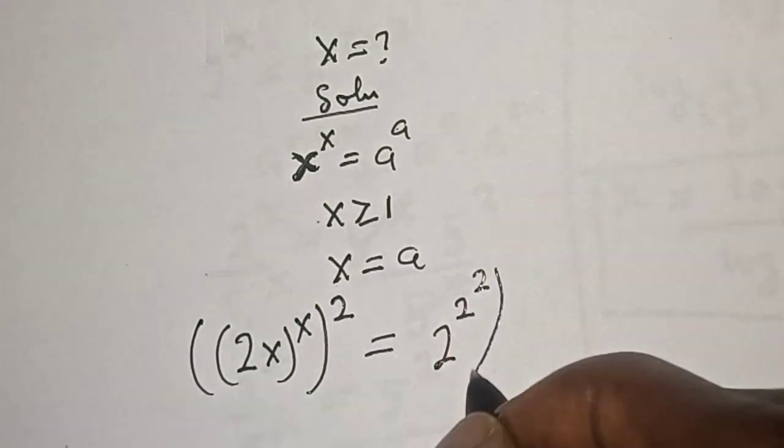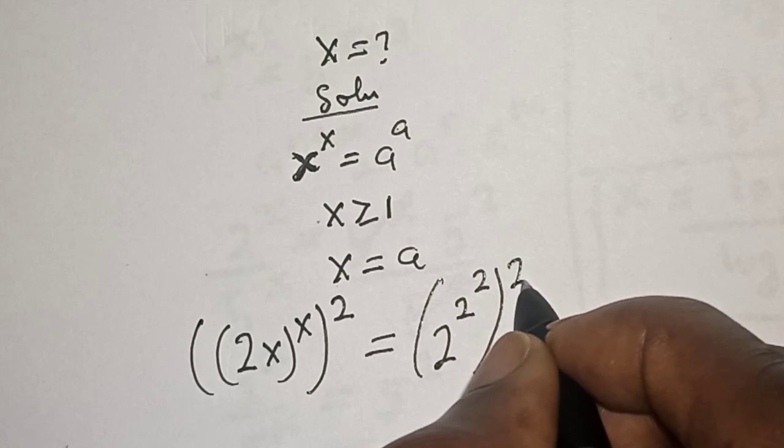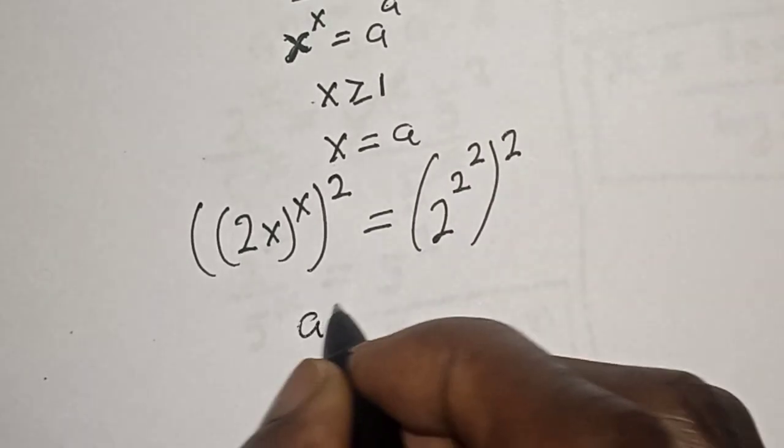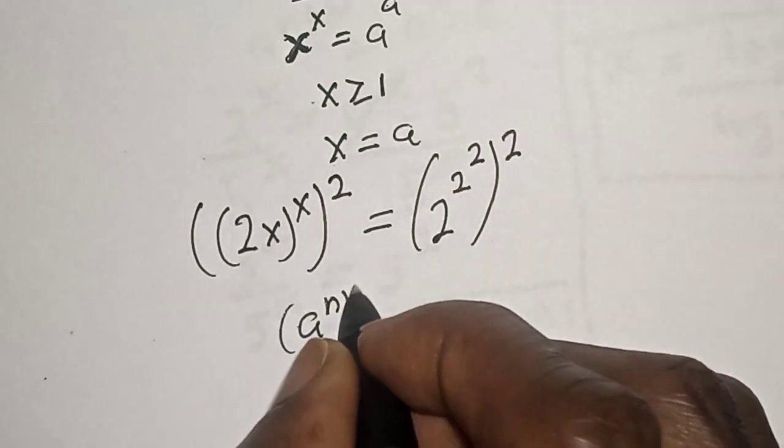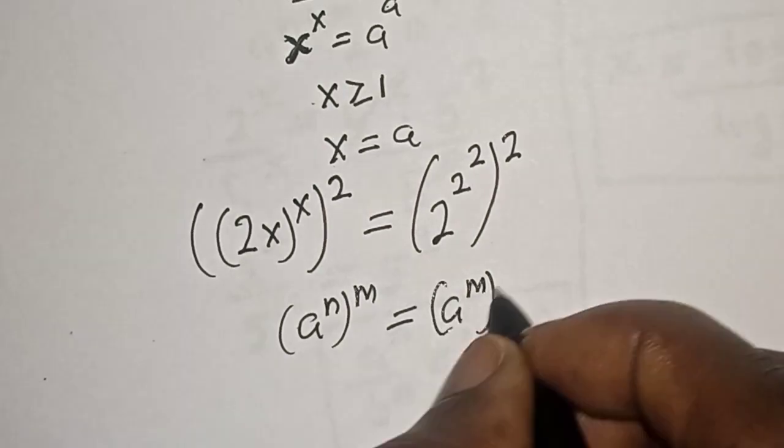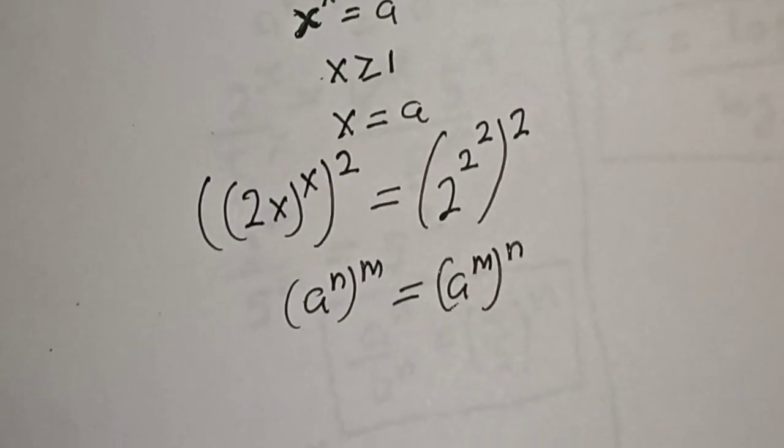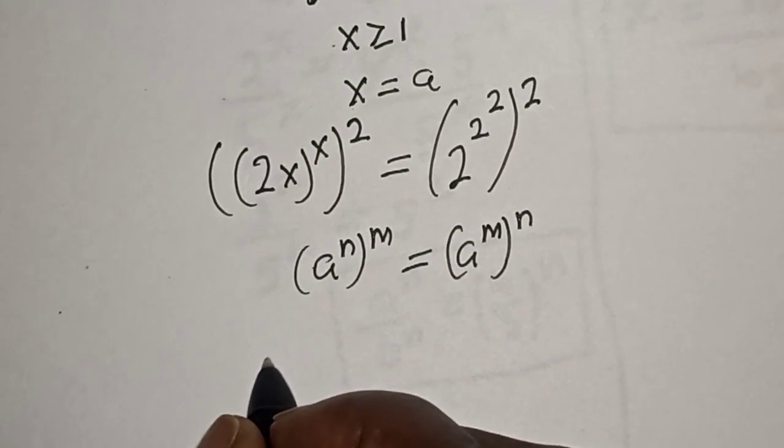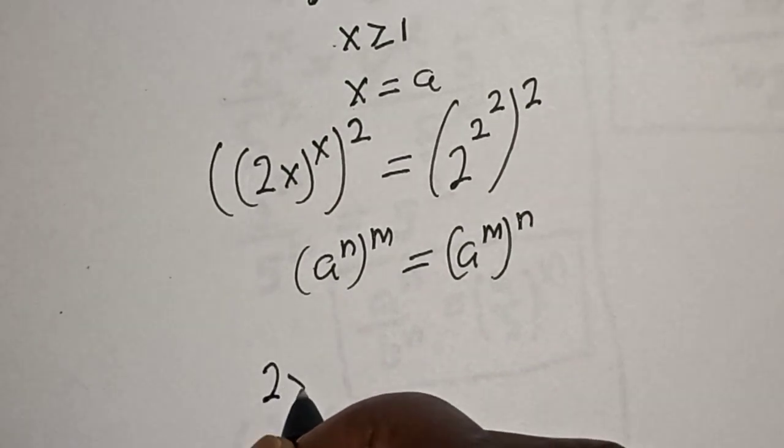Remember this exponential rule: a^n raised to power m is equal to a^m raised to power n. And this gives us (2x)^(2x).